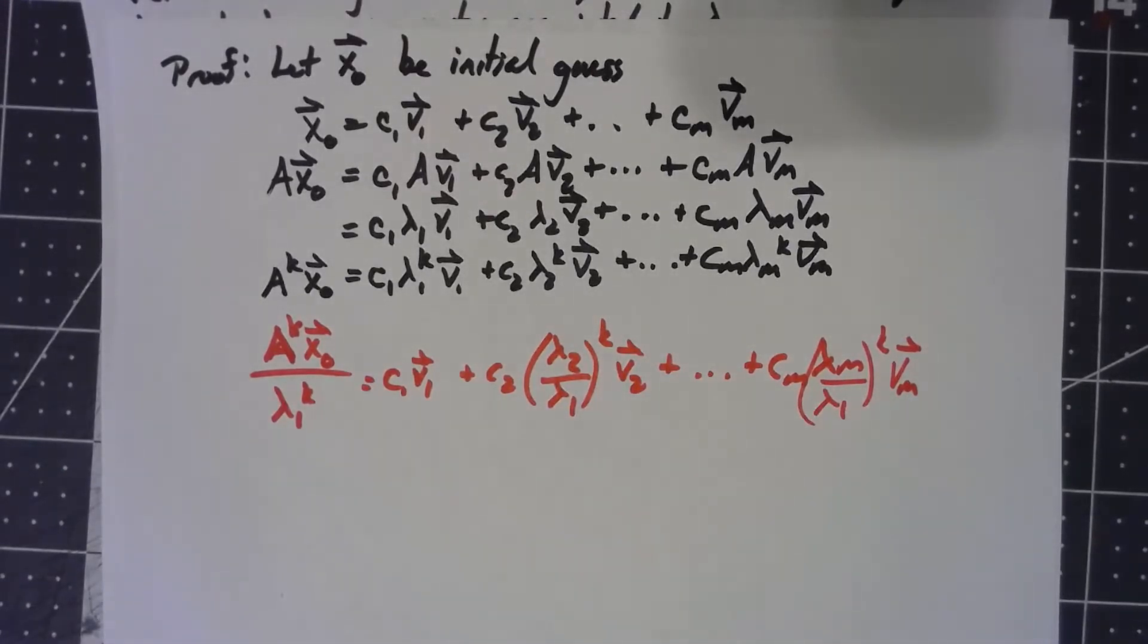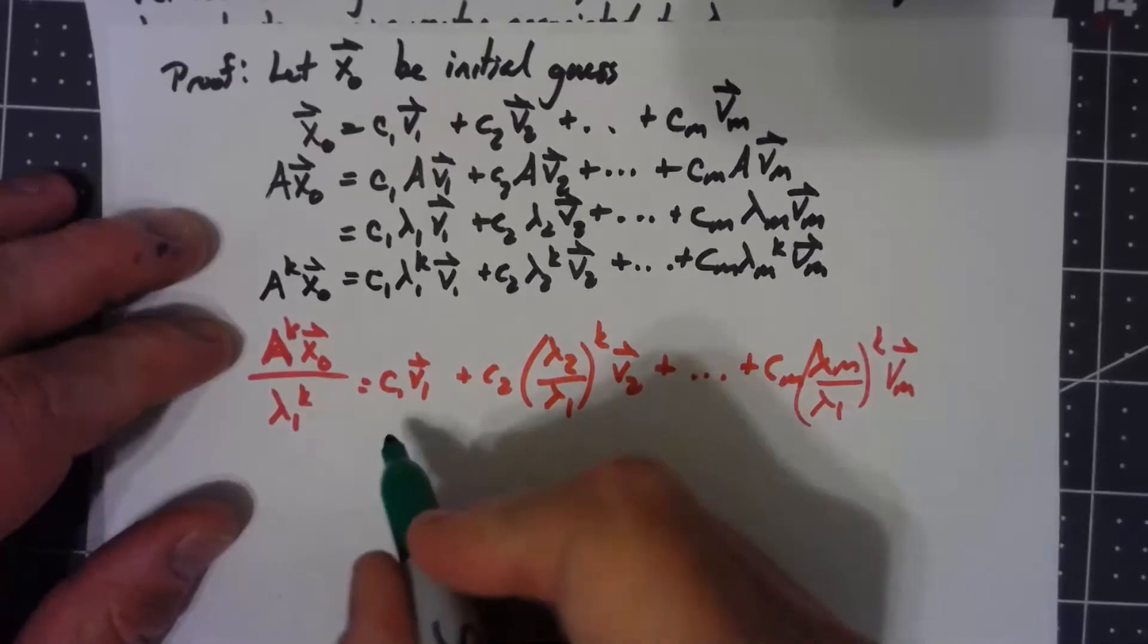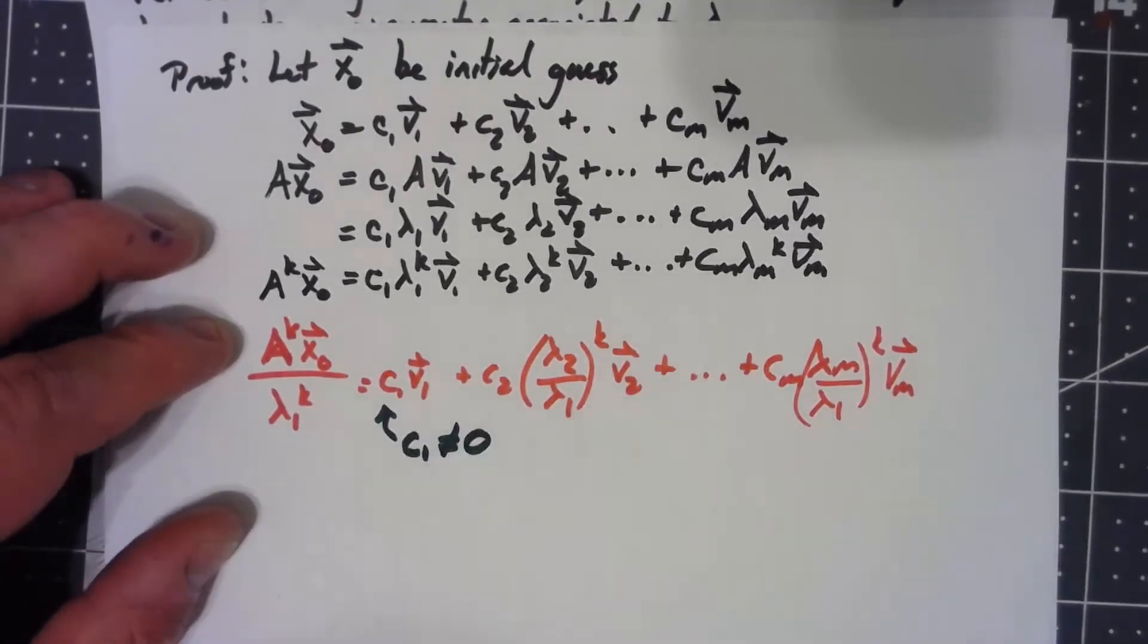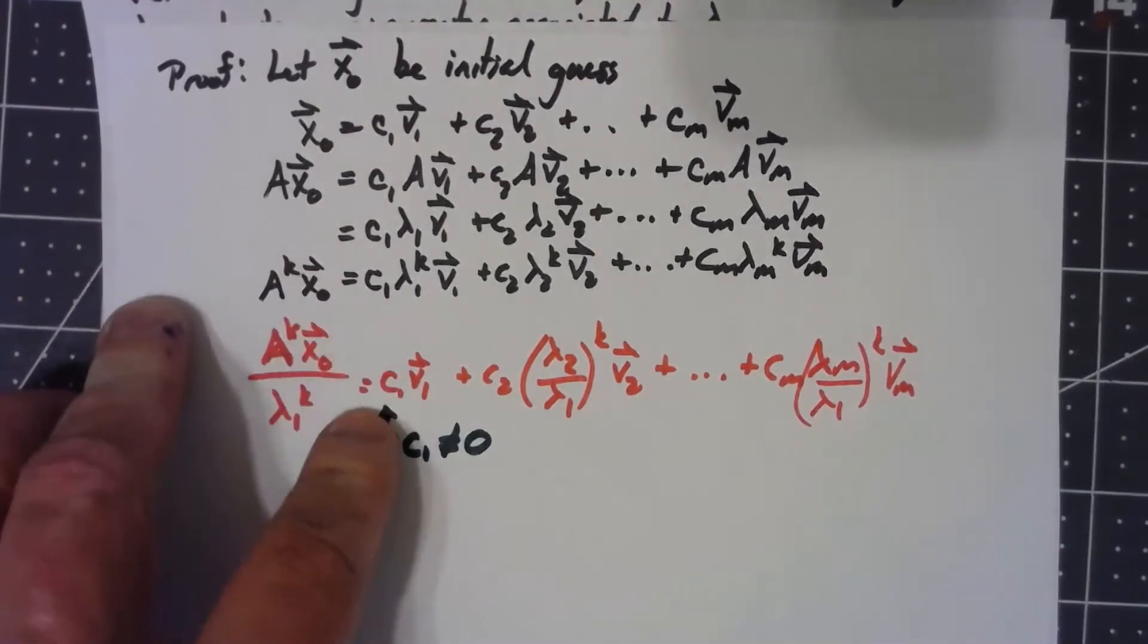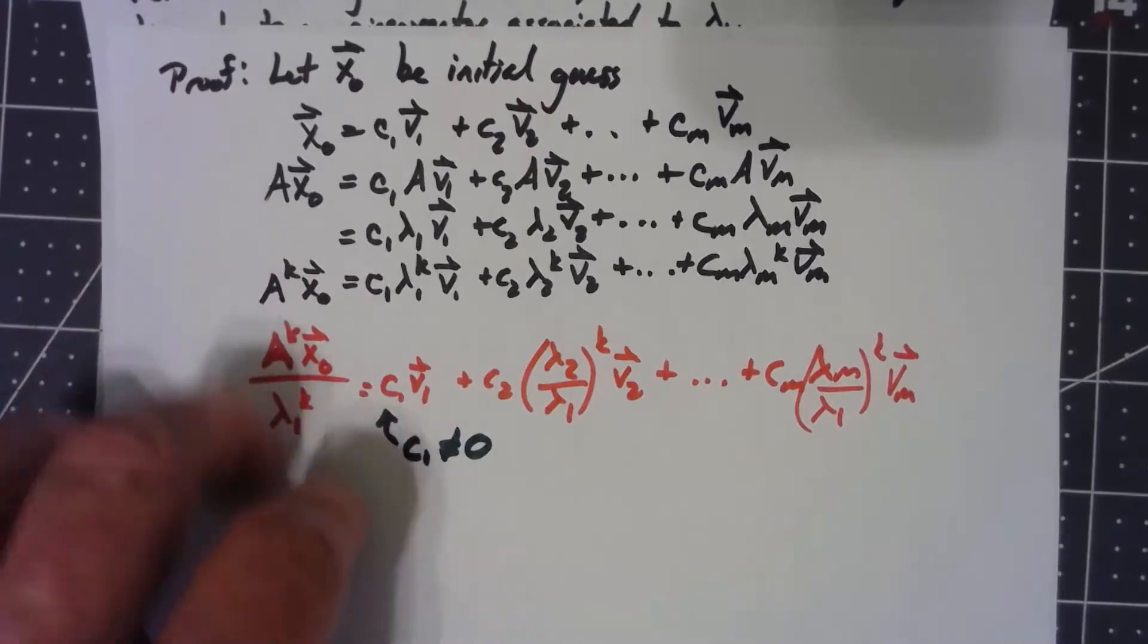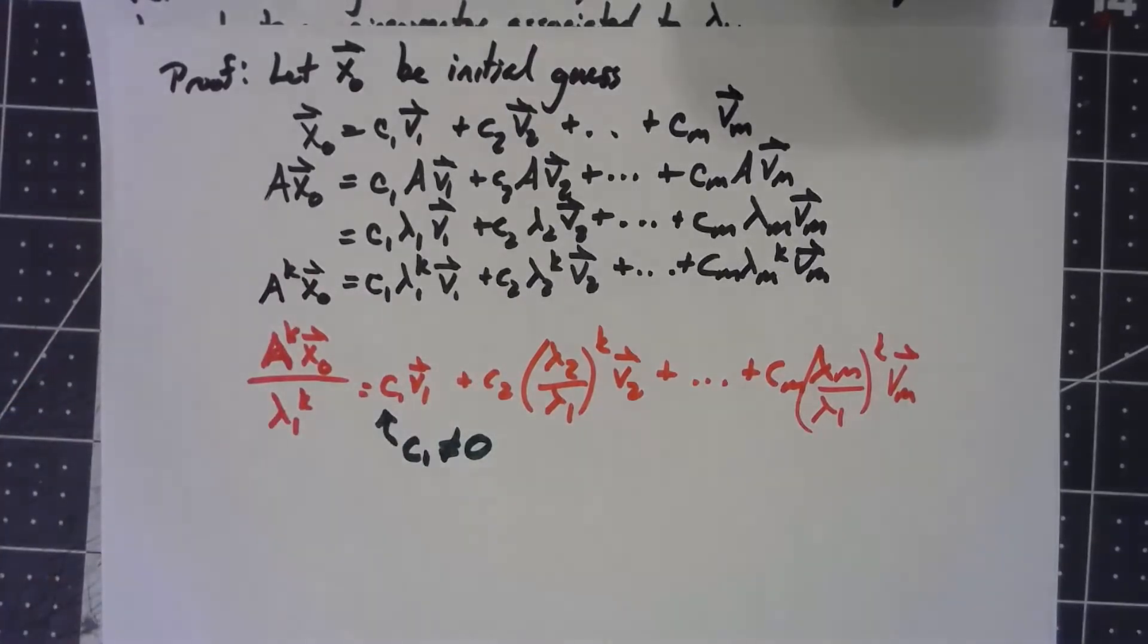Here's where the almost every initial guess comes in. As long as c_1 is not zero, as long as there is some component of this initial guess that includes v_1, then what's going to happen as k gets bigger?